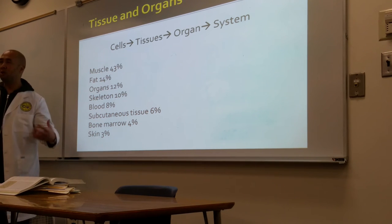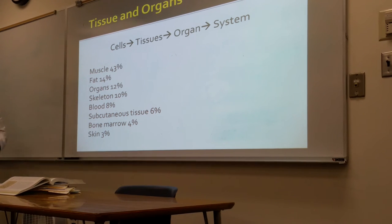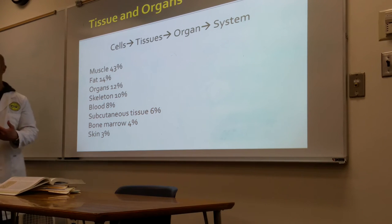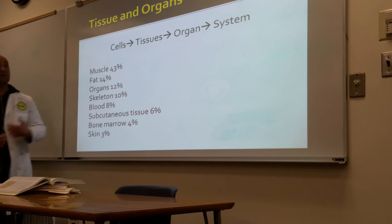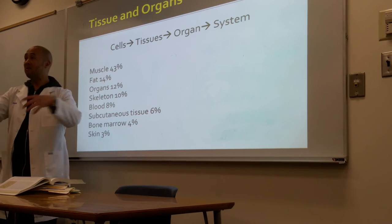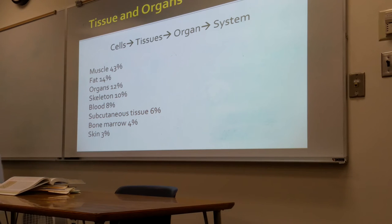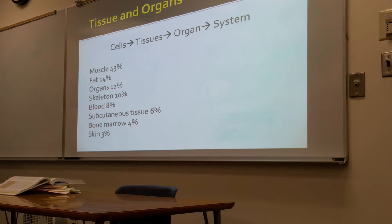From cells — when you have similar cells with similar functions, it becomes a tissue. Similar tissues become an organ, and when you have a set of organs with one main function it becomes a system. These systems include your nervous system, digestive system, endocrine system, respiratory, and circulatory systems.